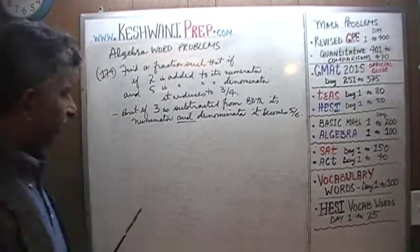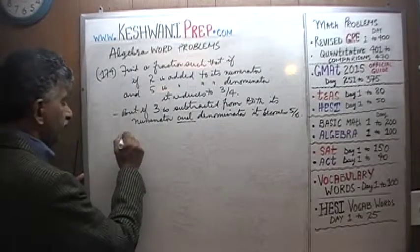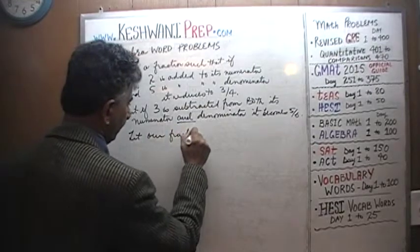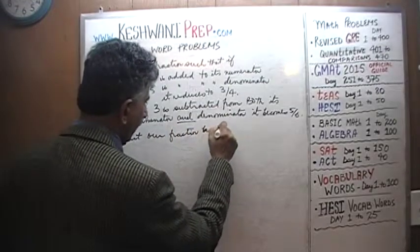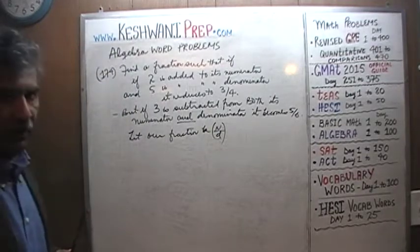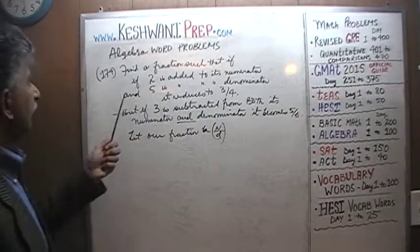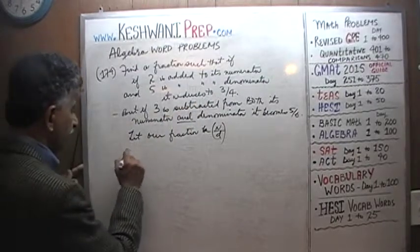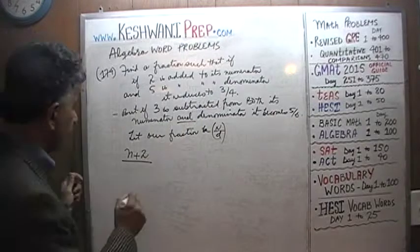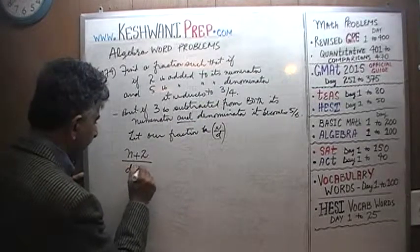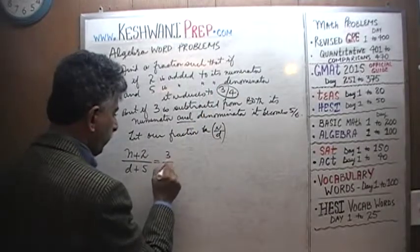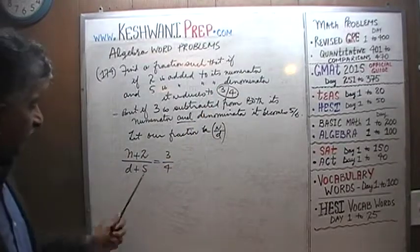So this represents our fraction that we are looking for. Let our fraction be N over D — N represents the numerator, D represents the denominator. Now we can begin our work. If 2 is added to the numerator N, and if 5 is added to the denominator D, it reduces to 3 quarters. That's our first equation.